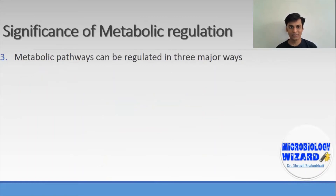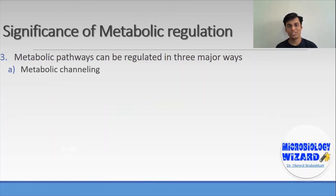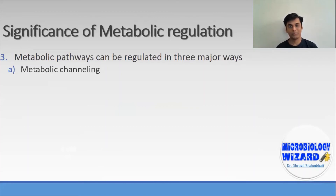The third and final significance of metabolic regulation is that metabolic pathways are regulated in three major ways. The first way is metabolic channeling: cellular metabolic functions are performed at various locations within the cell. One major form of metabolic channeling occurs through compartmentalization, where reactions occur simultaneously, requiring various reducing powers and energy components at the same time.